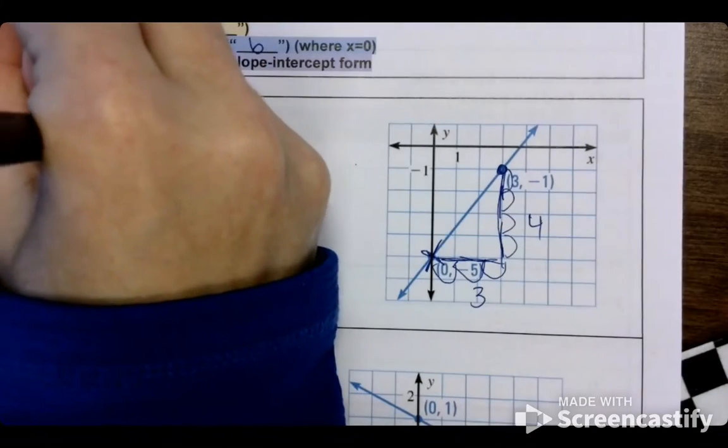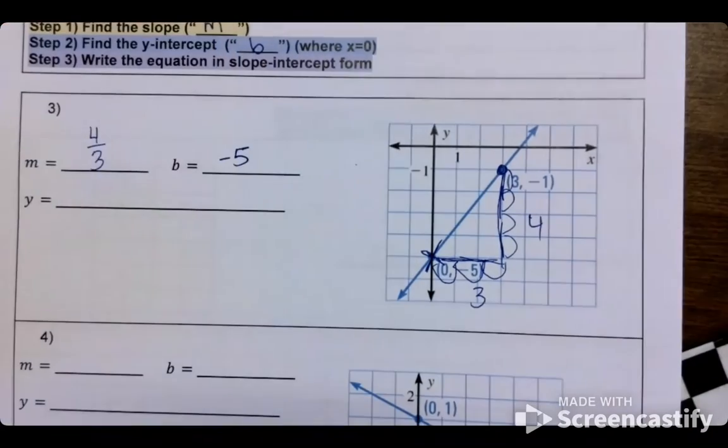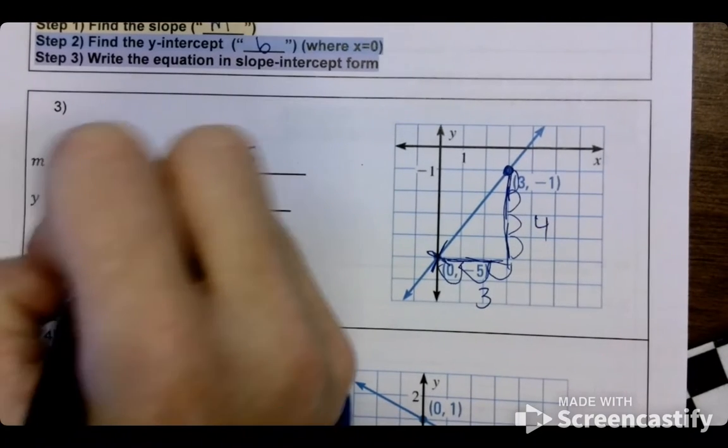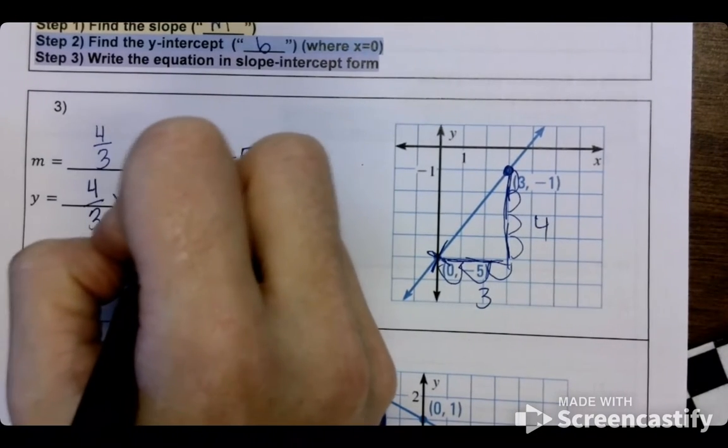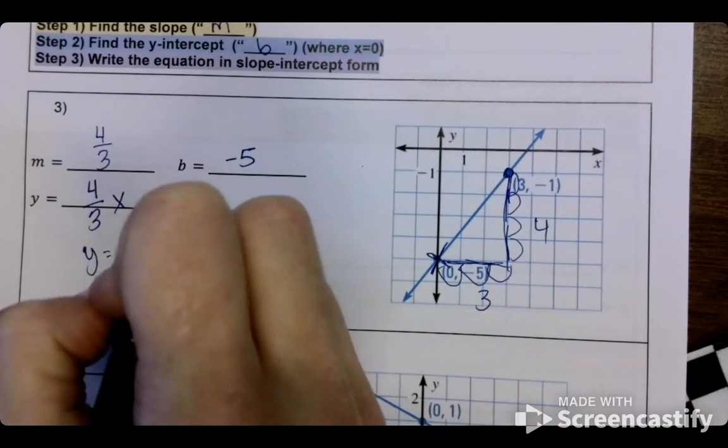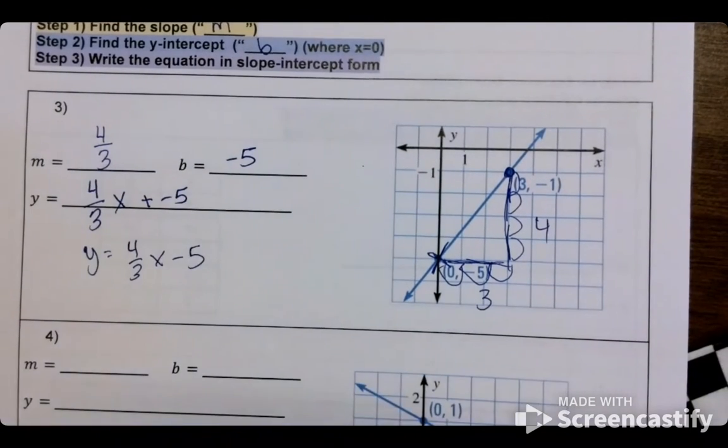Okay, so up and down is 4. Left to right is 3. It's 4 over 3. So if you write that, it would be 4 over 3x plus negative 5. Or y equals 4 thirds x minus 5. Either way.